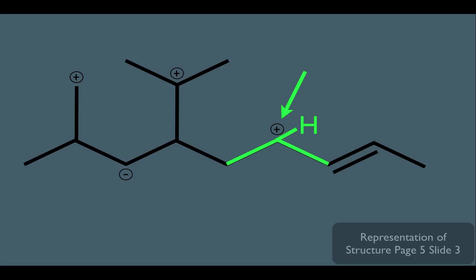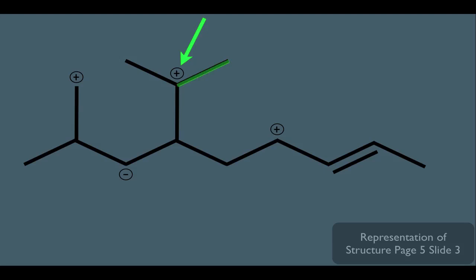Let's look at this carbon right here. How many hydrogens are connected to it? Because it has a formal charge, we know all carbons with a formal charge have one, two, three bonds like this, which means all of its bonds are taken up by other carbons. Therefore, it would have no hydrogens directly connected to it.